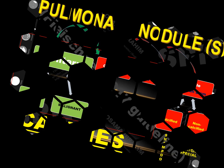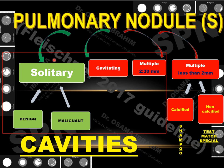As we know, the pulmonary nodule can be divided into solitary or multiple. A solitary pulmonary nodule should be discriminated as benign or malignant, as we will discuss today. Multiple pulmonary nodules can be cavitating, or multiple greater than 2 mm, or multiple less than 2 mm — which should be subdivided into calcified or non-calcified.